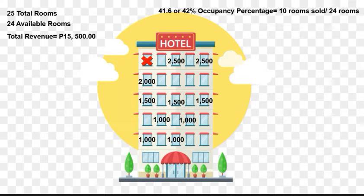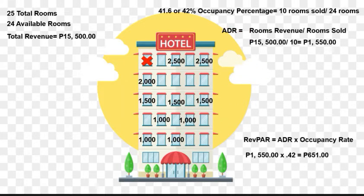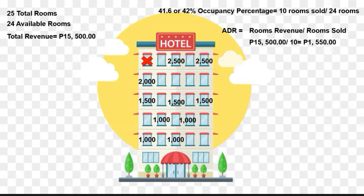Now let's move to the ADR or average daily rate. Here we take our room revenue of 15,500 and divide it by 10 rooms sold, giving us 1,550 per room. But keep in mind that this does not account for those rooms that are sitting empty. As we recall, this product is perishable — meaning if we don't sell a room on a given night, we can never get that night back and cannot sell it again. That's when RevPAR can be a better metric than ADR.